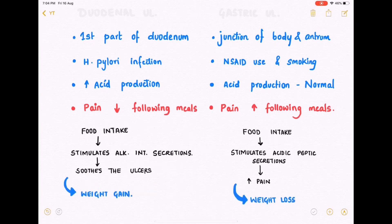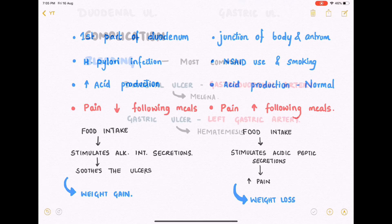Food also stimulates acidic peptic secretions, which increases the pain of gastric ulcers. This might mean that the patient avoids consumption of food, which may lead to weight loss over time.